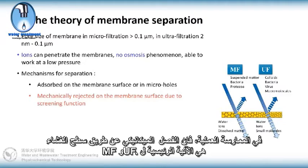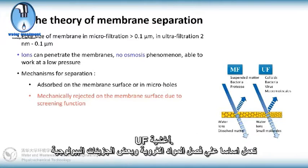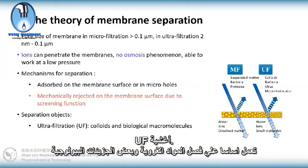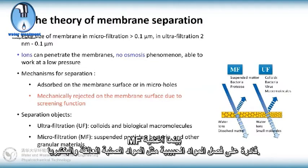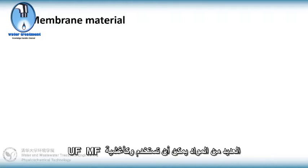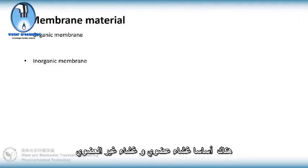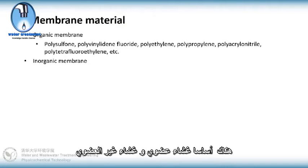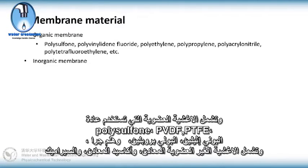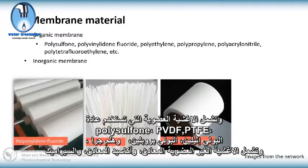UF membranes mainly separate colloids and some biological macromolecules, while MF membranes are able to separate granular materials like suspended solids and bacteria. Many materials can be used as UF and MF membranes, majorly containing organic membranes and inorganic membranes. Commonly used organic membrane materials include polysulfone, PVDF, polyethylene, polypropylene, PTFE, and so on.